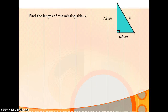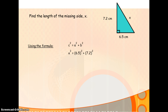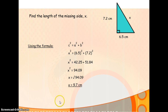A third example — try this on your own if you wish, press pause and then check your solution against what we have here. Again, take the formula and substitute in your values: x squared is 6.5 squared plus 7.2 squared. Work it all out and you find that x squared is 94.09. Take the square root and you find that x is 9.7. Does that look reasonable? Yes, it does — you know it's going to be the longest side and longer than 7.2.